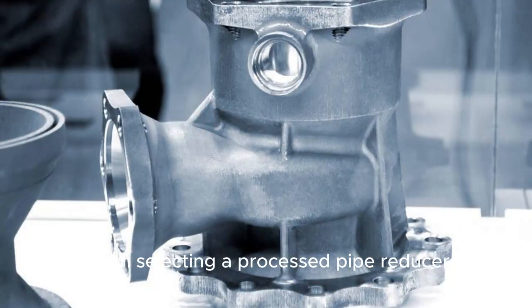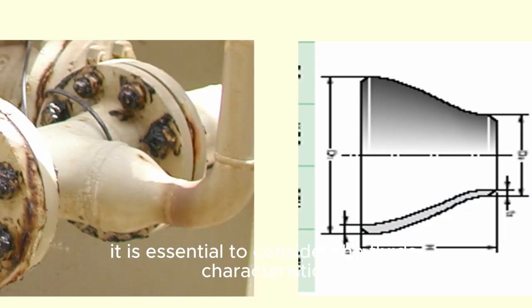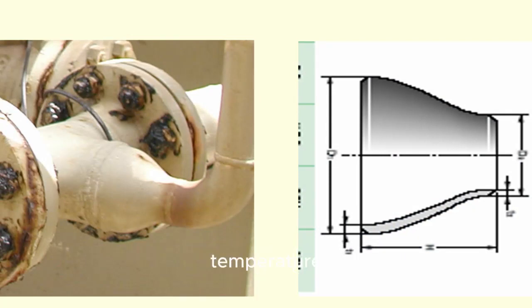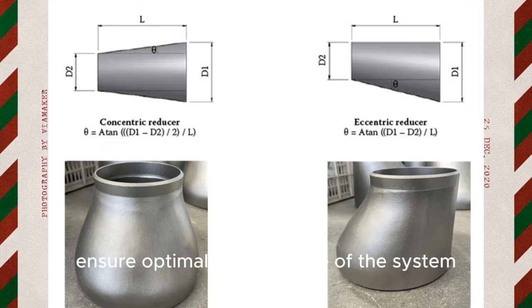When selecting a process pipe reducer, it is essential to consider the fluid's characteristics, such as viscosity, temperature, and corrosiveness. Additionally, understanding the required flow rate and pressure drop limitations is crucial in choosing the right reducer to ensure optimal performance of the system.